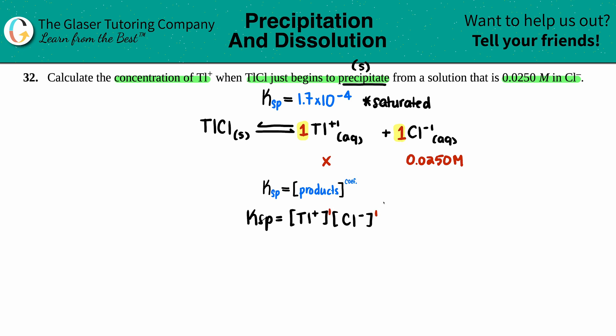TI is x, Cl is 0.0250, and the Ksp that I went to the back of the textbook to find is 1.7 × 10^-4. So, 1.7 × 10^-4 = x × 0.0250.